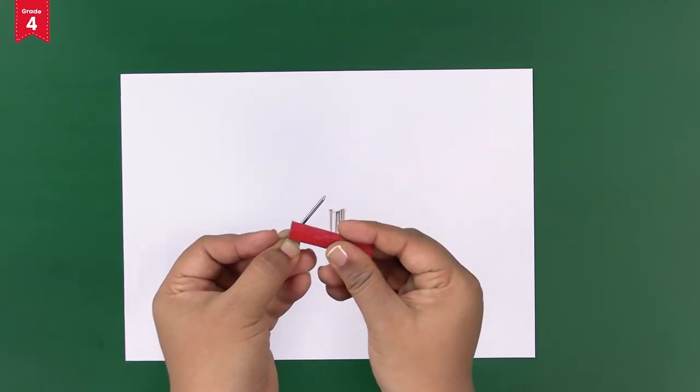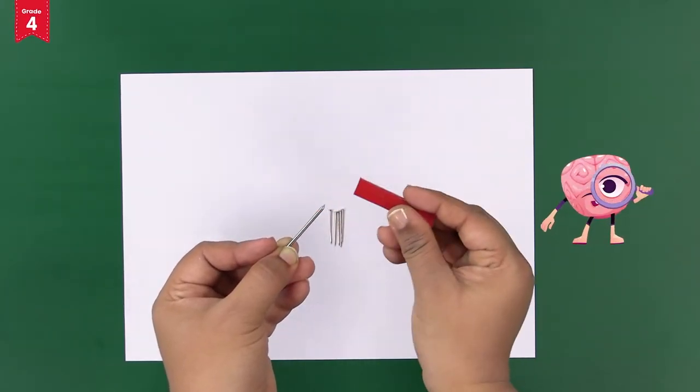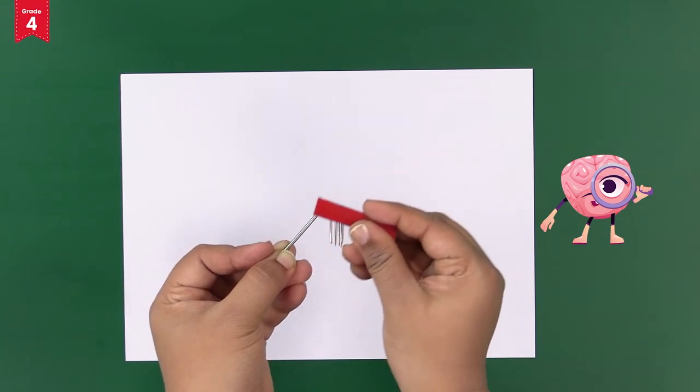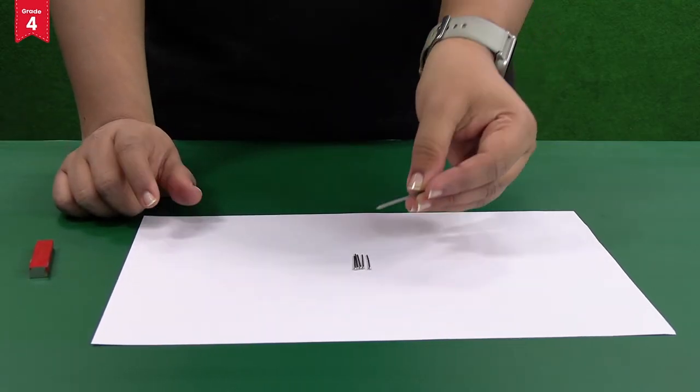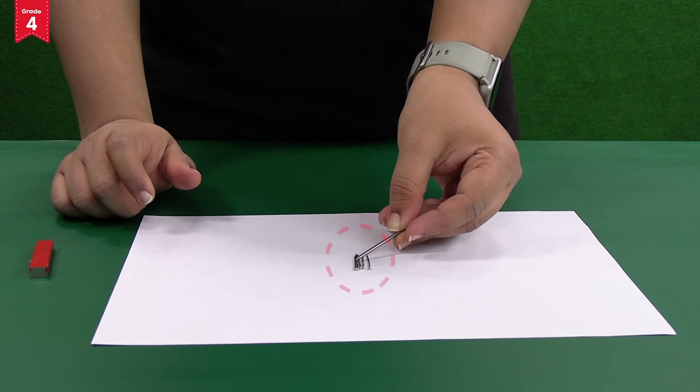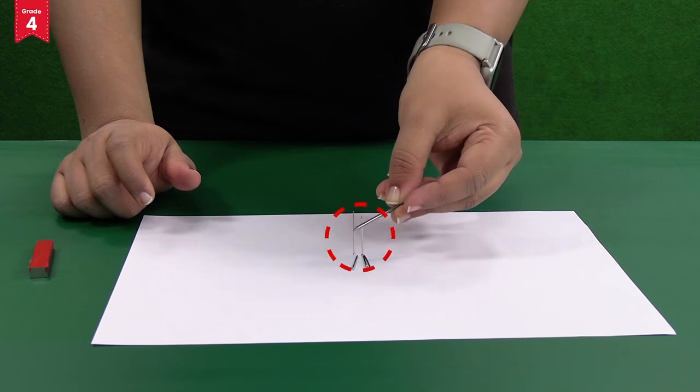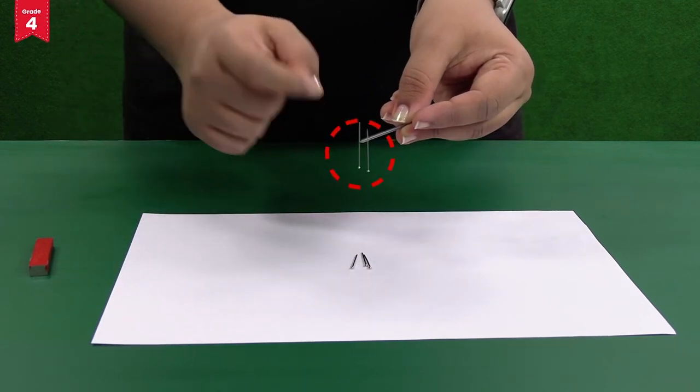Now, let's see whether the nail has been magnetized or not. To check this, bring the iron nail closer to all the pins. Can you see that the pins are now getting attracted towards the iron nail?